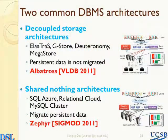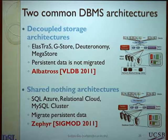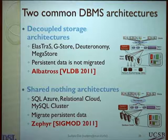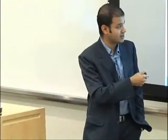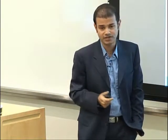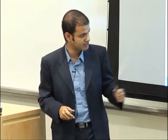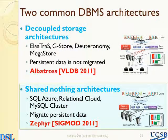There is also another way of designing databases — the standard shared-nothing design, where the persistent data is stored in locally attached storage. Here, when migrating, it's a harder problem because you have to move large amounts of data as well. Common examples of this architecture are SQL Azure, Relational Cloud from MIT, and MySQL cluster. I proposed a technique called Zephyr, which was presented recently at SIGMOD in June. In this talk I'll focus on Zephyr. As one comment noted, in shared-nothing architectures like SQL Azure, they already replicate data for availability guarantees, which can be leveraged.